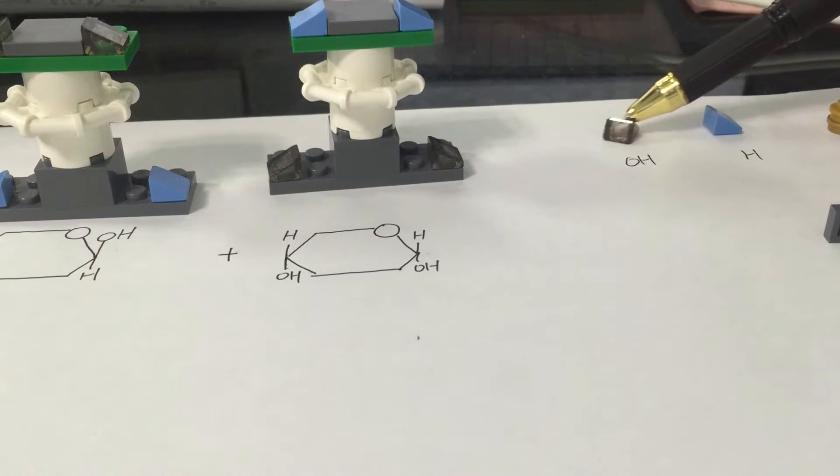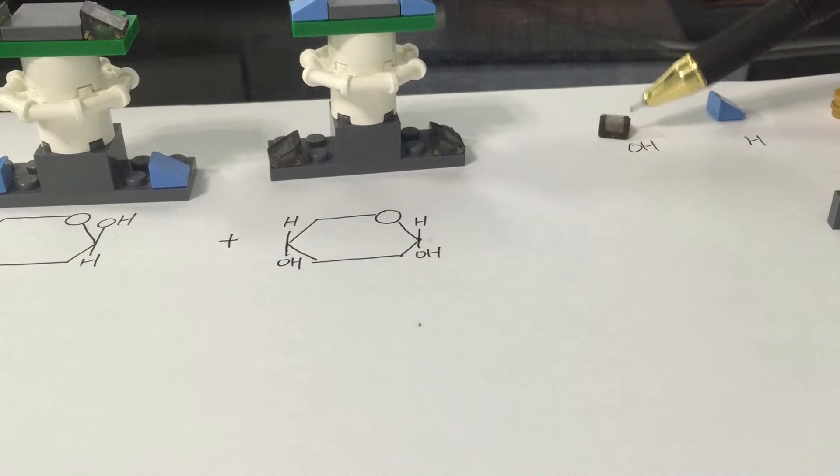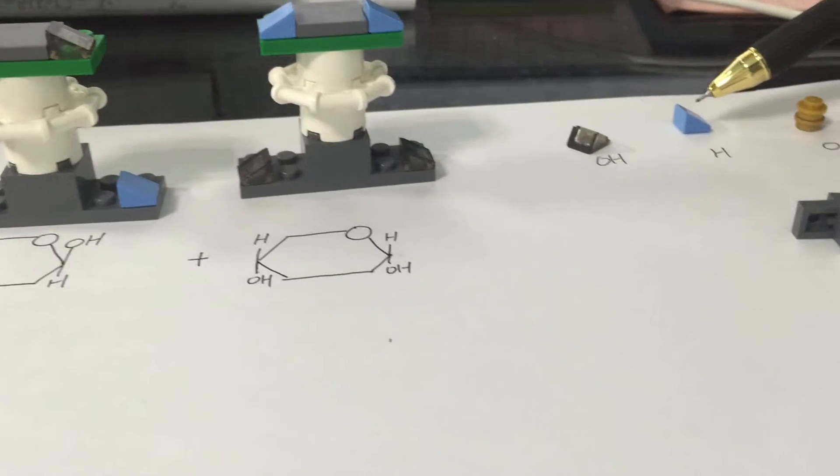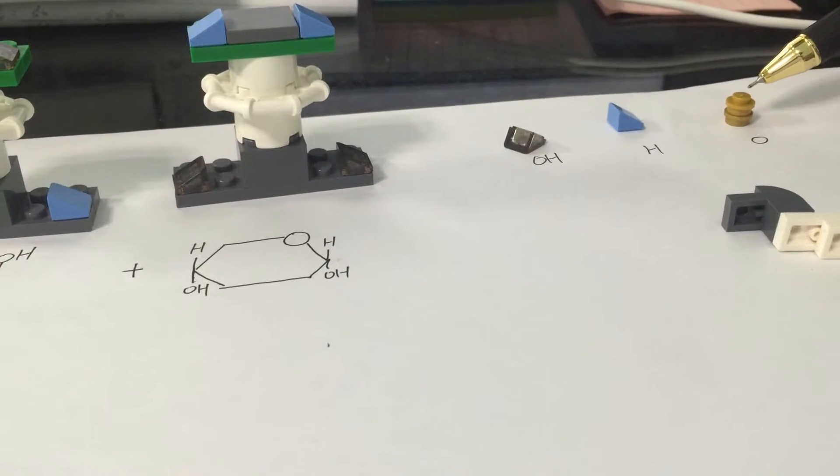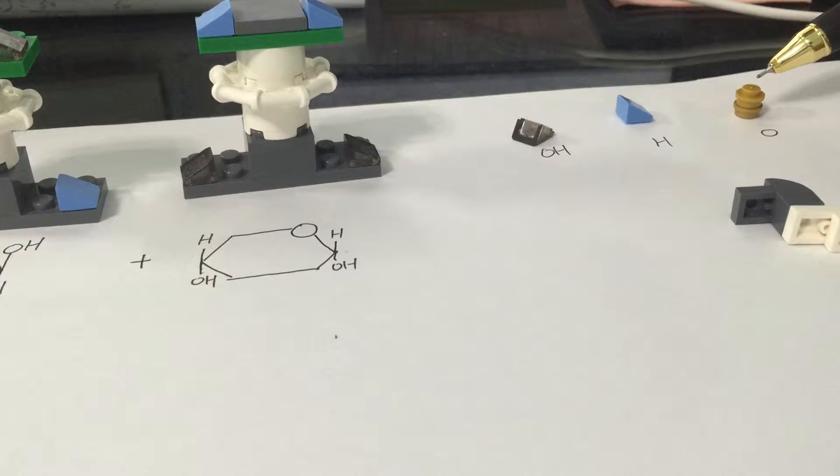This black piece will represent the OH and this will represent the H. This will represent the oxygen we use during the formation.